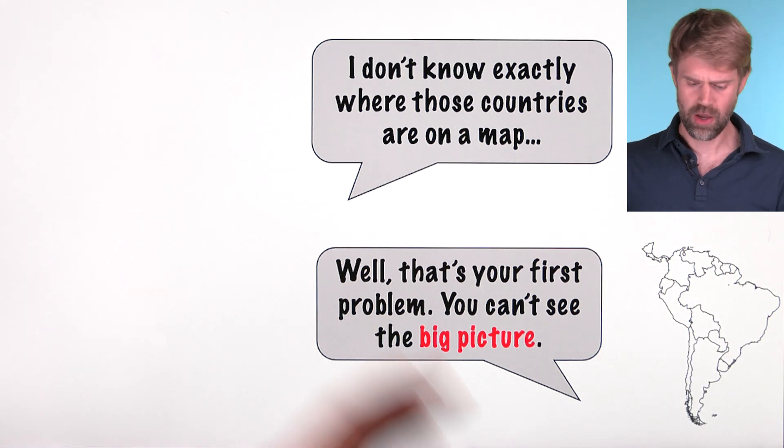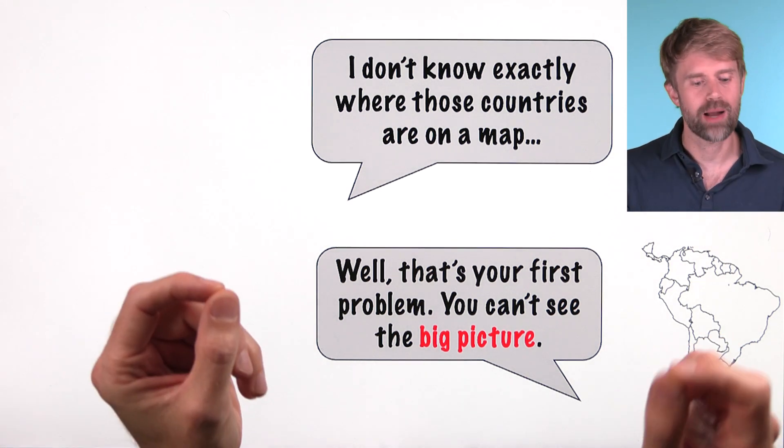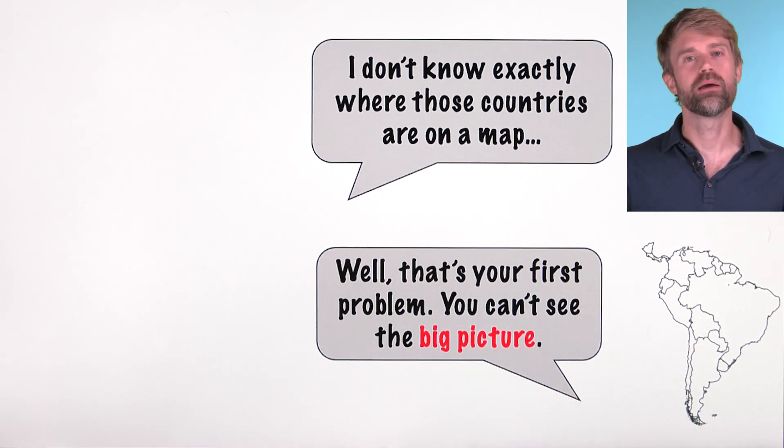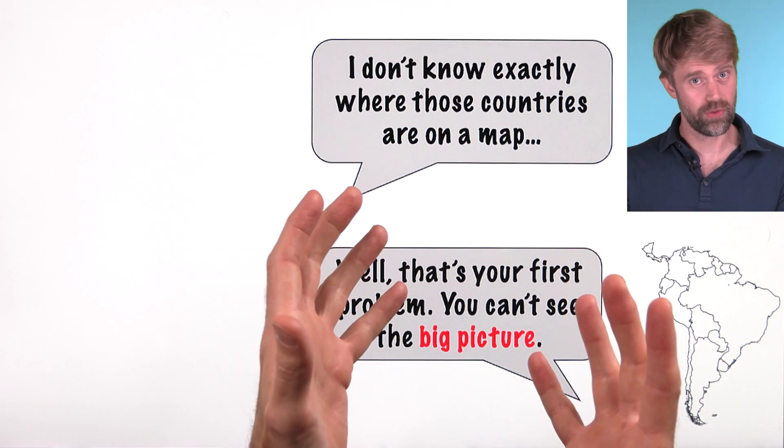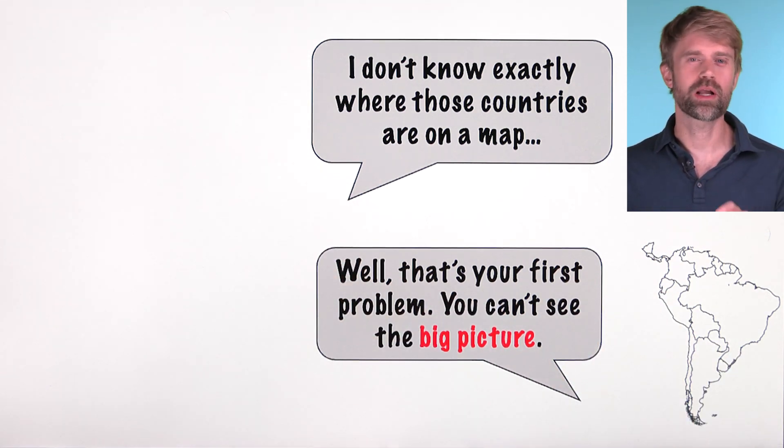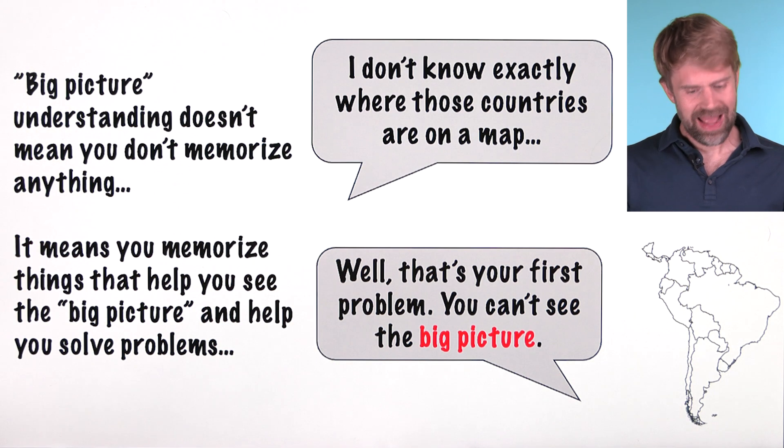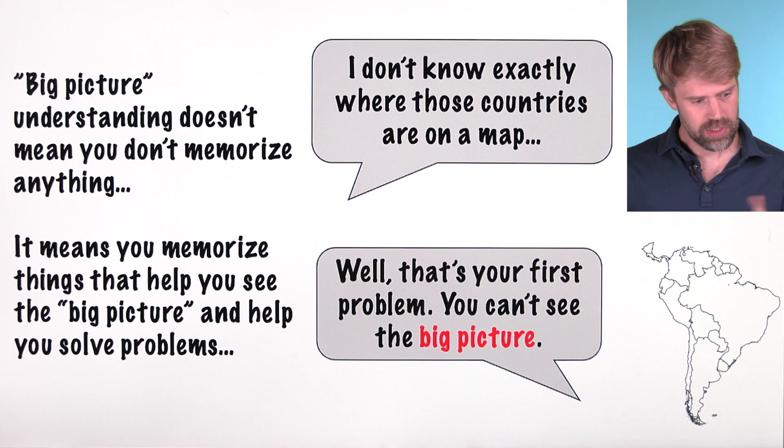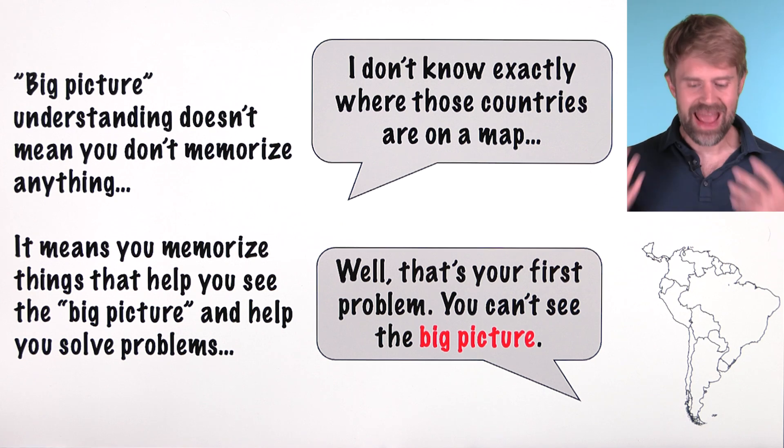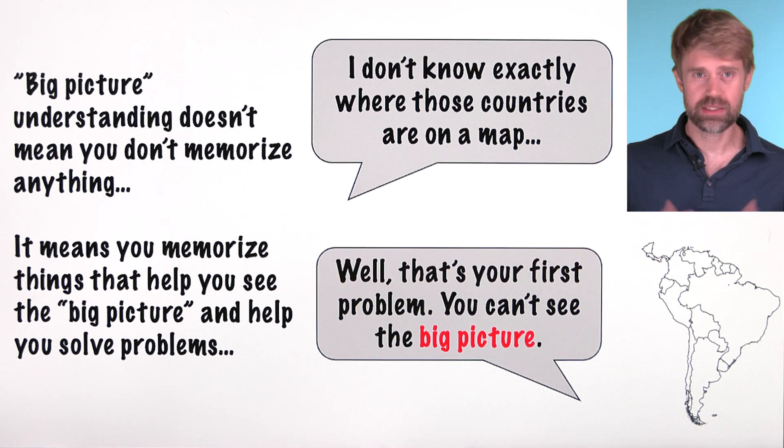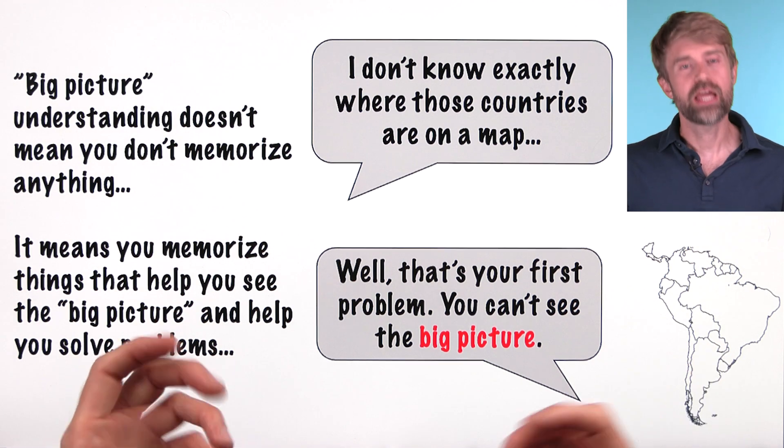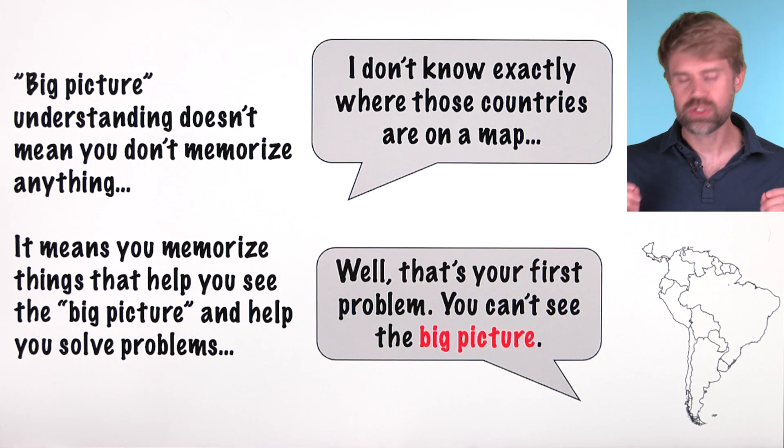I remember saying something like, well, I don't know exactly where those countries are on a map. And of course my dad said, well, that's your first problem. You can't see the big picture. I hope this shows how seeing the big picture can be incredibly helpful and lets you move away from worrying about all of the tiny details, sometimes. Sometimes you do have to have stuff memorized though, and that's important to keep in mind. Big picture understanding doesn't mean that you don't memorize anything. It means you memorize things that help you see, well, the big picture. You memorize stuff that actually helps you solve problems.